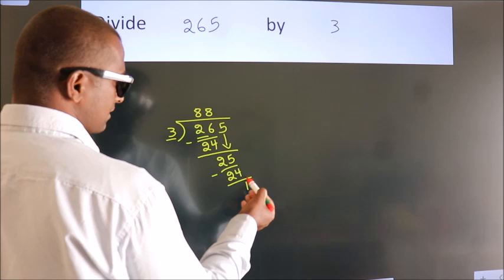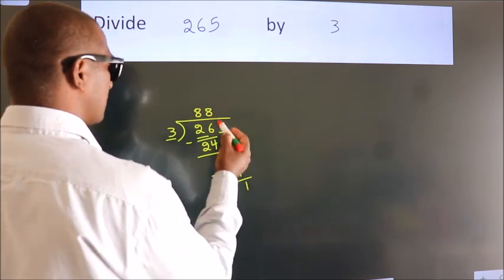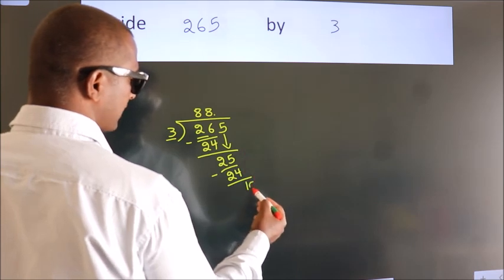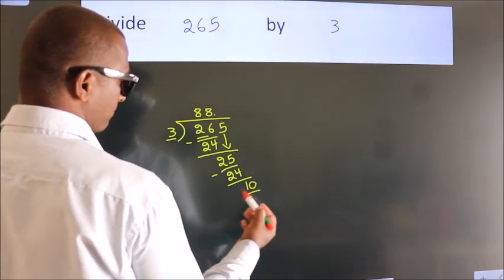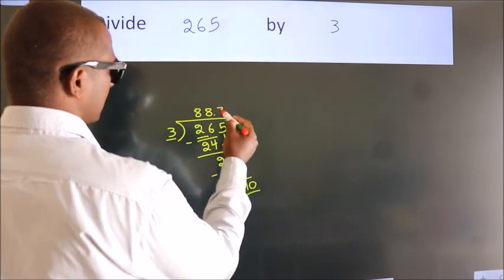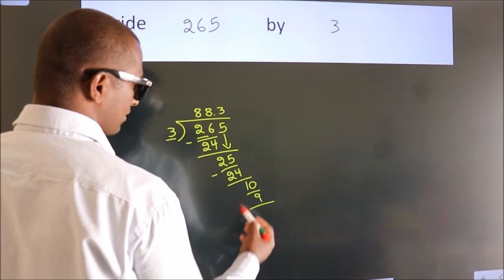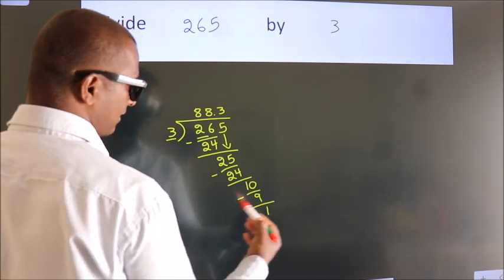After this, no more numbers to bring down. So what we do is we put a dot and take 0. So 10. A number close to 10 in the 3 table is 3 times 3, which is 9. Now we subtract. We get 1.